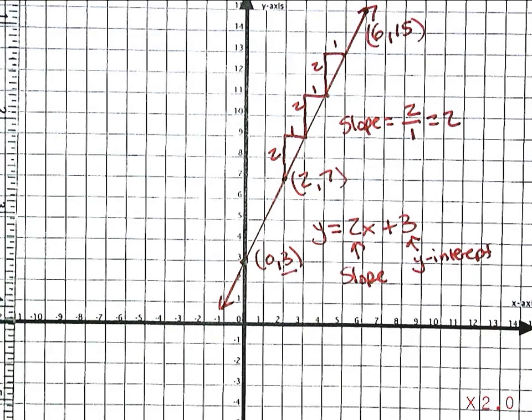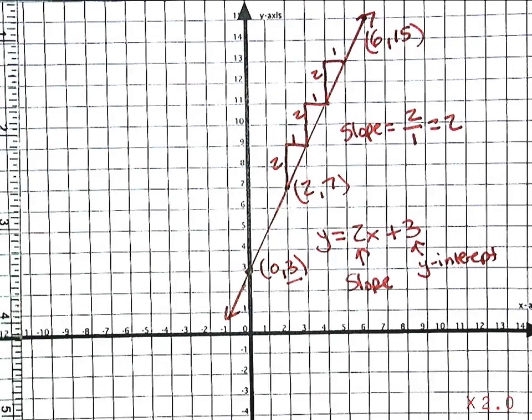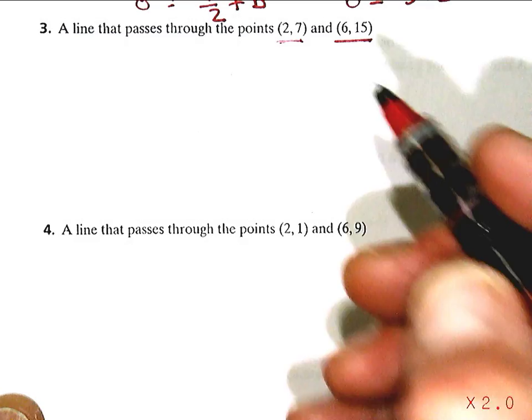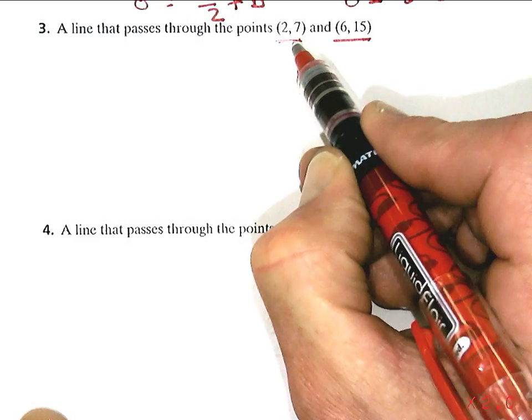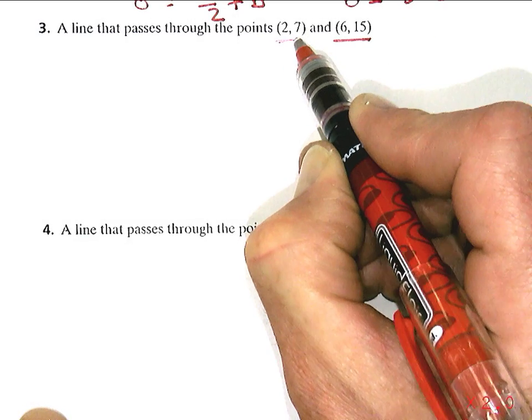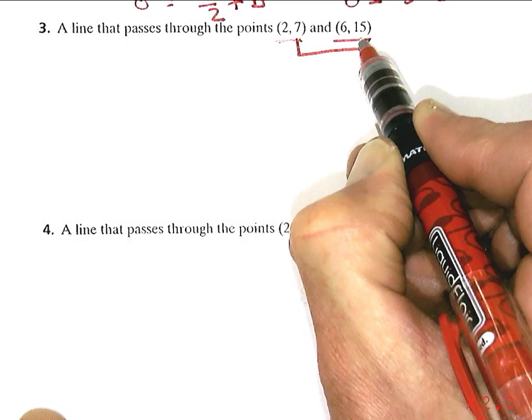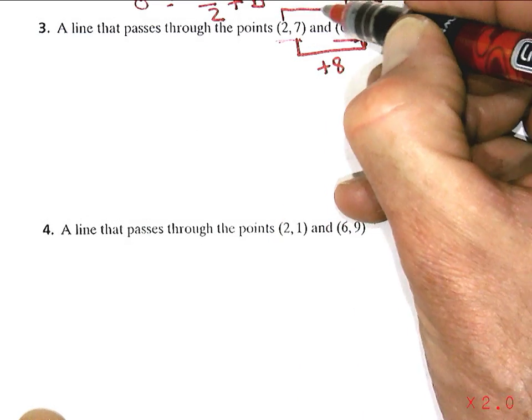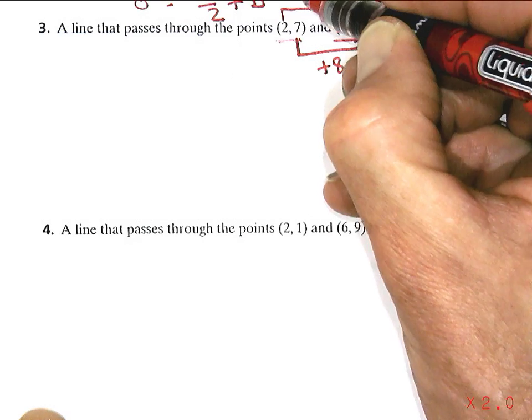Now if I had not drawn the graph first, and I actually just wanted to find that equation from the points, I could still do that. All I need to do is find out what the change is from 7 to 15, which is plus 8, and the change from 2 to 6, which is plus 4.